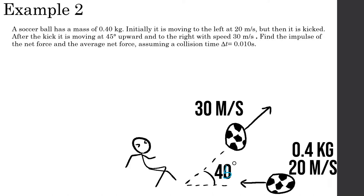To solve this, we find the impulse in the x direction and the y direction separately. First, let's find the velocity components after the kick at 45 degrees. The x-component is 30 times cosine of 45, which gives 21.21 meters per second. Since it's a 45-degree angle, the y-component is also 21.21 meters per second.